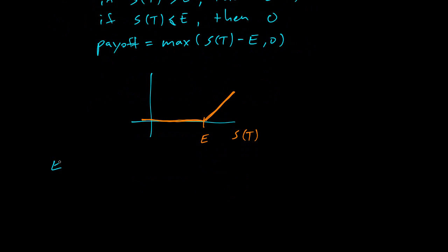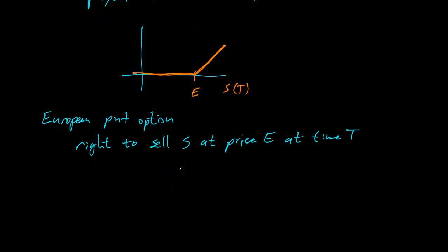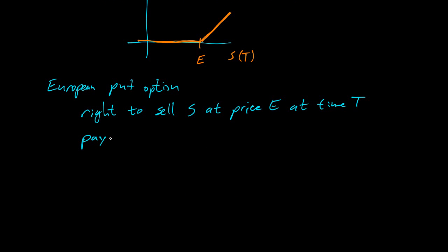A European put option is similar to a call option. It's the right to sell at the fixed price E at time T. The payout is max of E minus S of T comma zero.